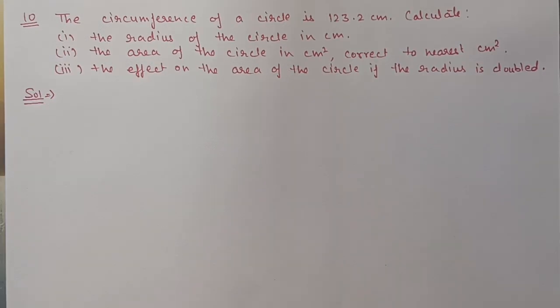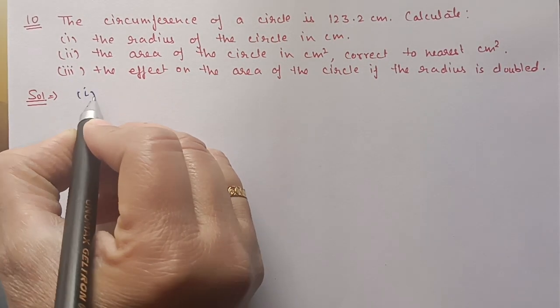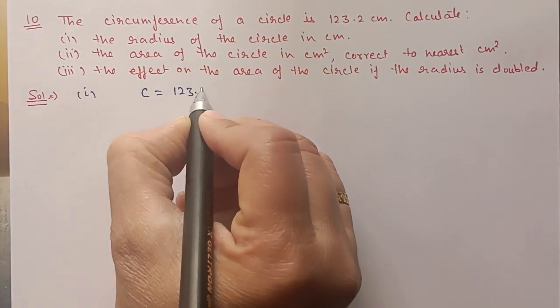Next we have Question 10. The circumference of a circle is 123.2 centimeters. Calculate: (a) the radius of the circle in centimeters, (b) the area of the circle in centimeters squared to the nearest centimeter squared, and (c) the effect on the area if the radius is doubled. We start with the given circumference C = 123.2 centimeters.